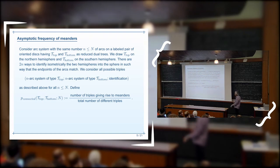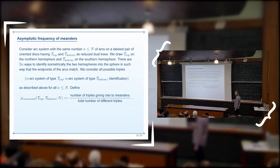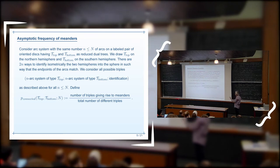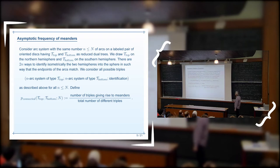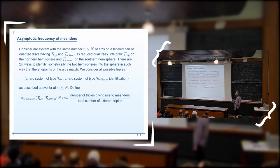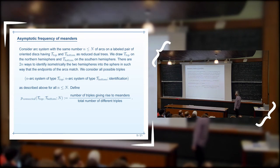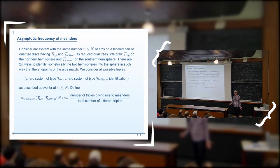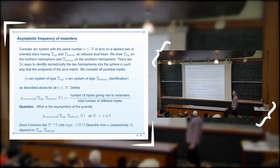Fix the setting. We fix two trees — our combinatorial passports — tree T_top corresponding to the arc system on the northern hemisphere and T_bottom for the southern hemisphere. We consider all n arc systems of type T_top on the northern hemisphere, n arc systems of type T_bottom on the southern hemisphere, all possible identifications, and impose a bound N on the number of arcs. We count the ratio of the number of triples giving rise to meanders over the total number of different triples — this is the frequency of appearance of meanders out of two arc systems.